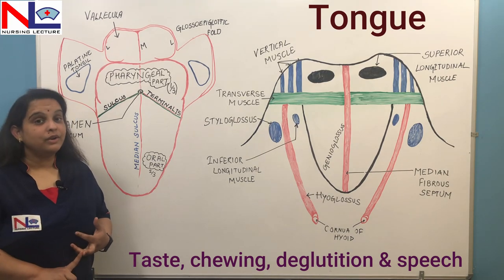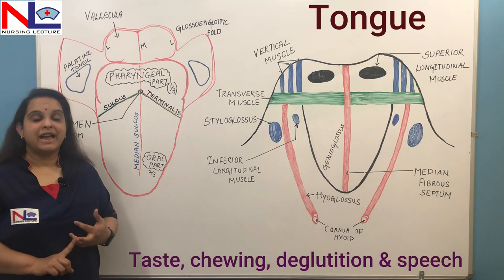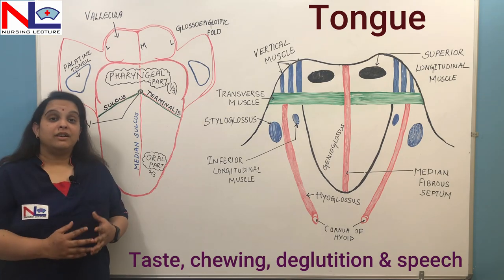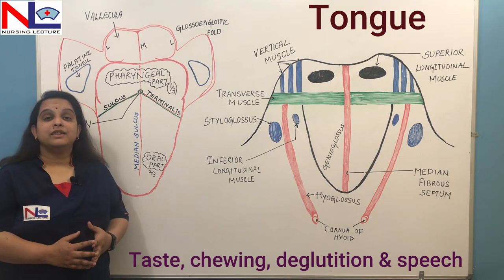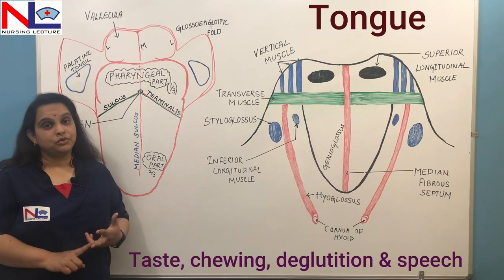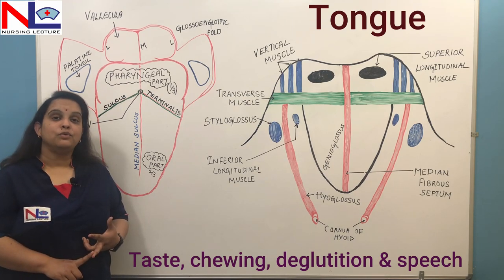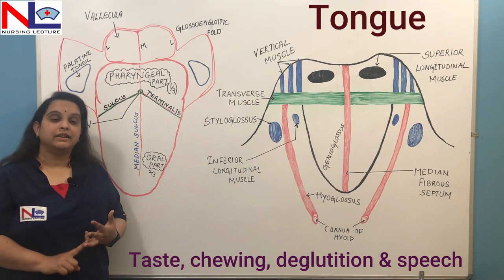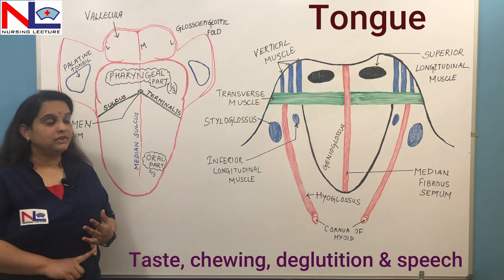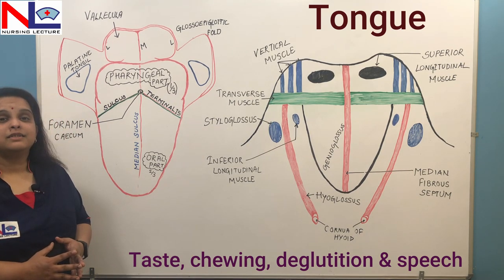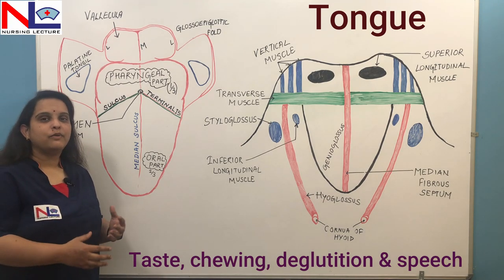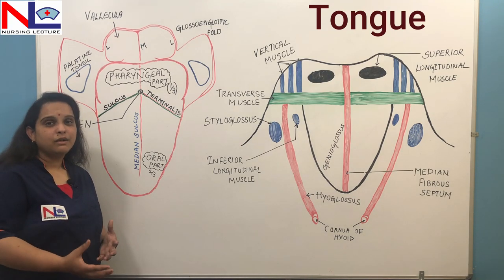The tongue also helps in speech. So the tongue assists in various functions: for taste, for the chewing of food, it propels the food, it helps in deglutition, and for speech. Here we'll discuss its structure and what muscles are responsible for its various functions. We are not going into detail about its sensory pathway — we are just discussing its structure.